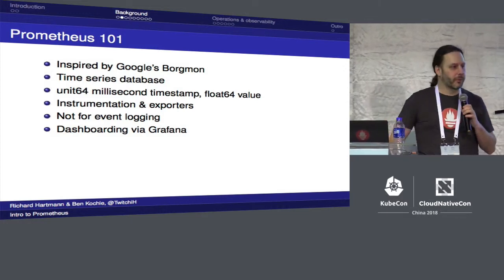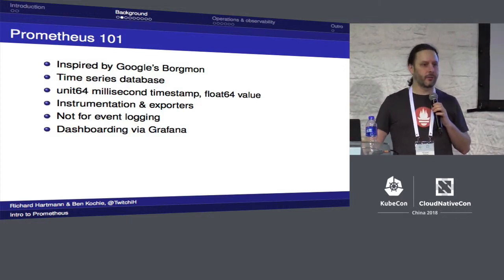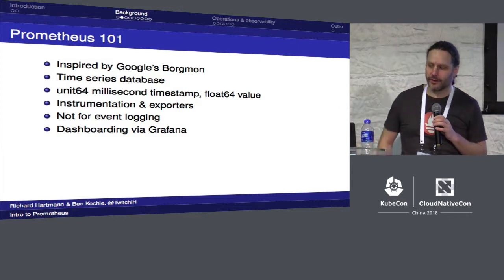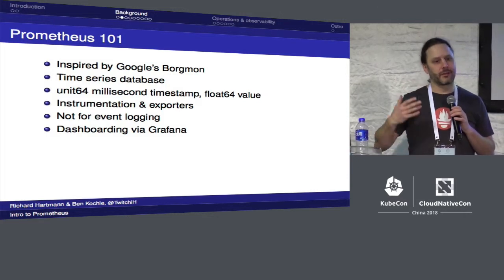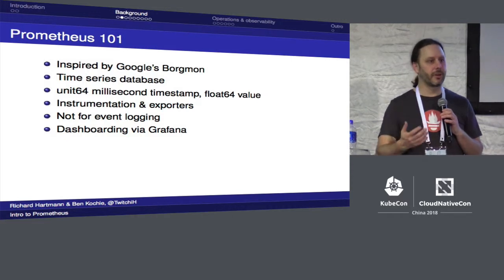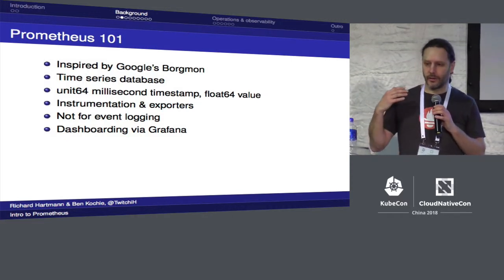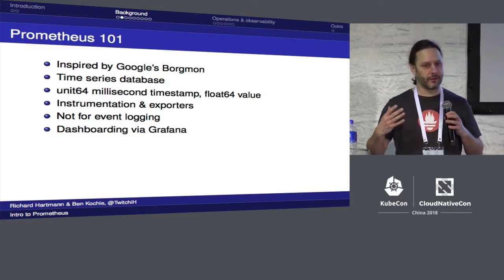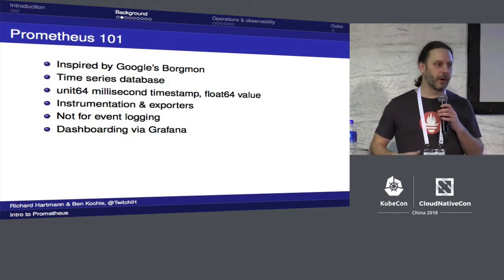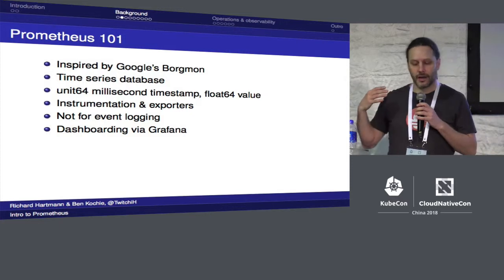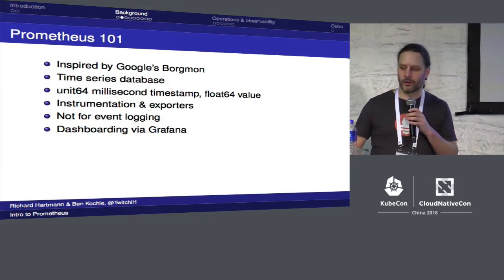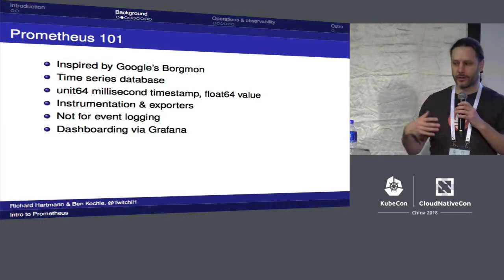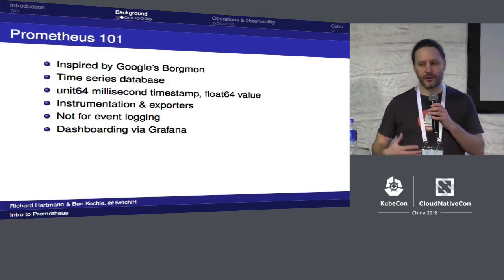So where did Prometheus come from? Back in late 2012, early 2013, SoundCloud was working on their own container environment. They had a couple of ex-Google engineers who knew that container monitoring was going to be a different story than a normal setup. They had Graphite and Nagios, but really wanted to converge those tools. Being former Googlers, they had used Borgmon, one of Google's internal monitoring systems, which was well-suited for container monitoring.